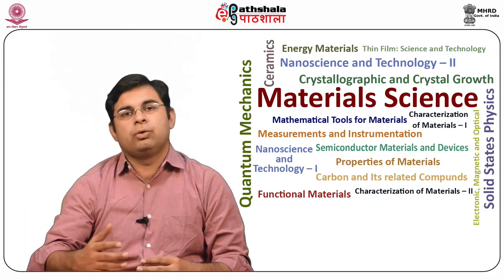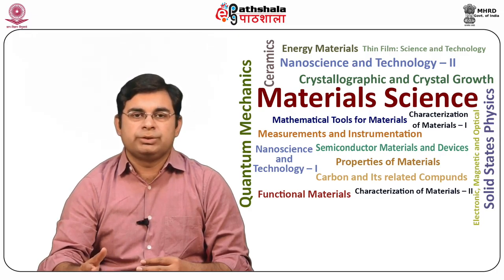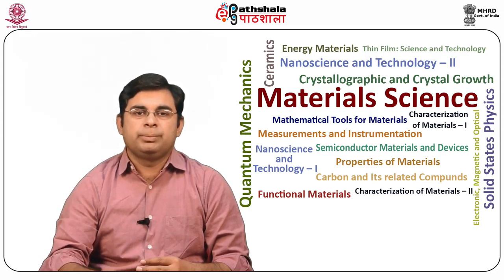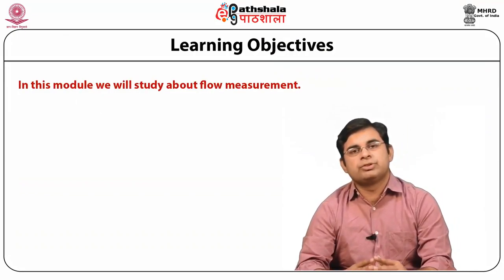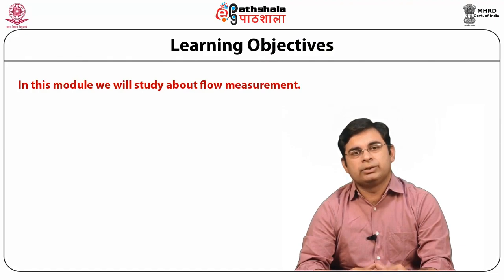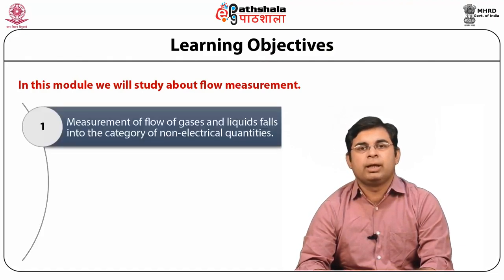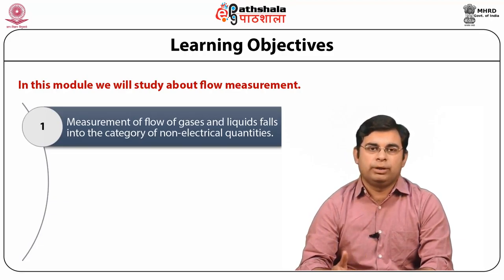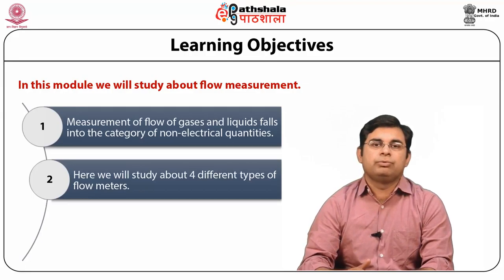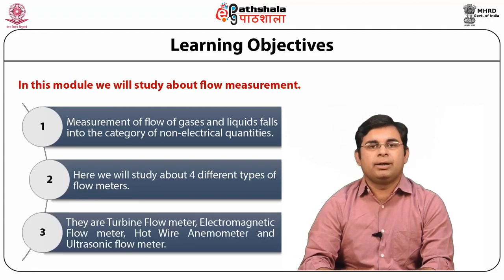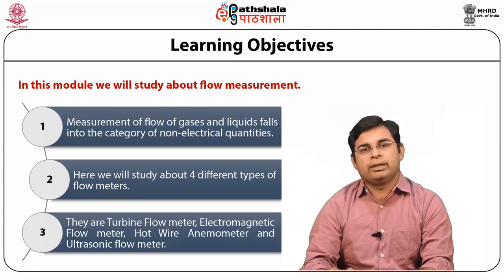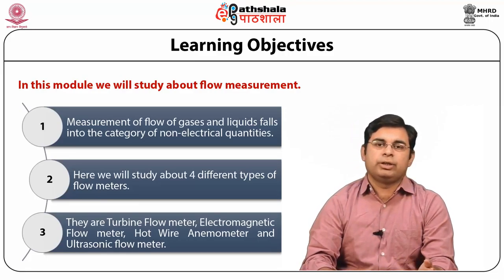Today we are going to talk on the module of flow measurements under the paper measurement and instrumentations. In this module we will study about flow measurements — that is, measurement of flow of gases and liquids, which falls into the category of non-electrical quantities. Here we will study about four different types of flow meters: turbine flow meter, electromagnetic flow meter, hot wire anemometer, and ultrasonic flow meter.